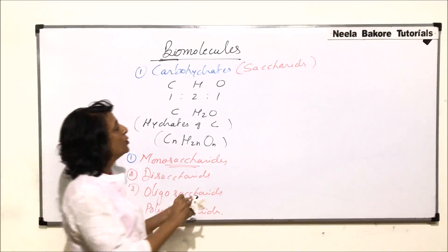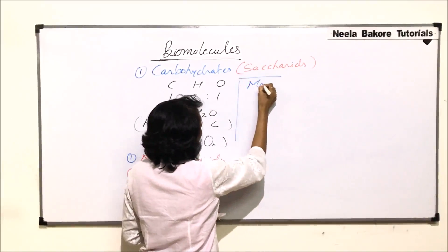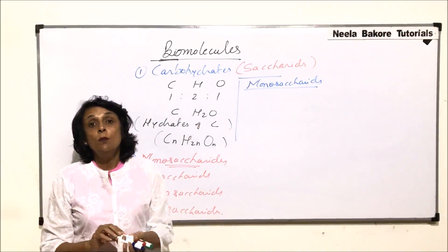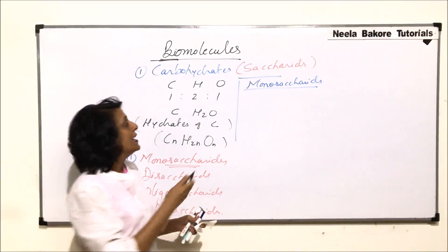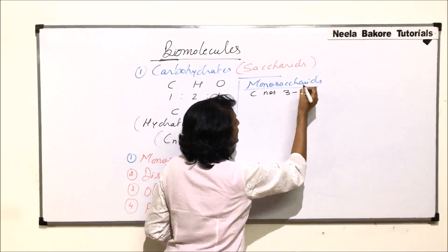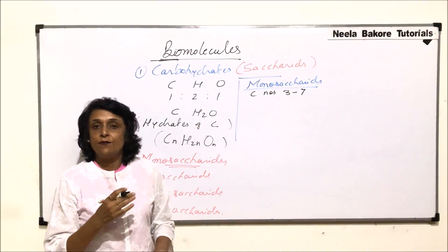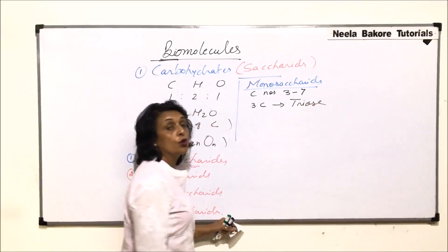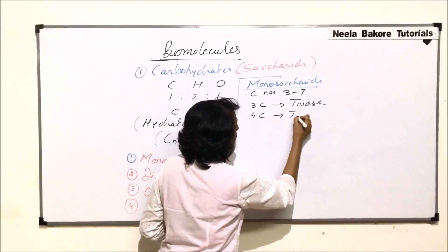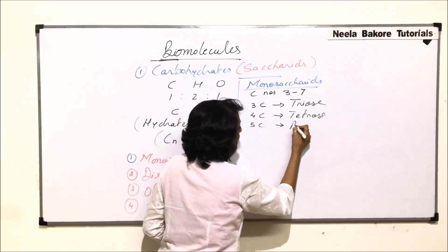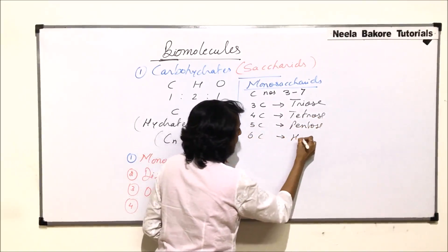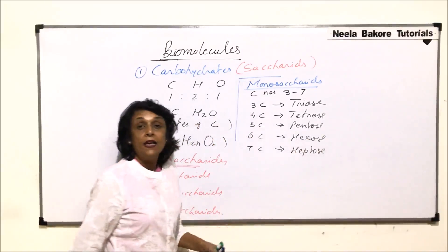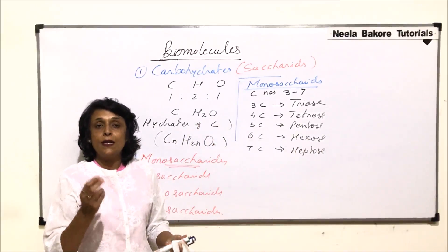Monosaccharides means single unit. Monosaccharides may have carbon numbers from three to seven. If there are three carbons, we call that sugar a triose sugar. Four carbons is a tetrose sugar, five carbons is a pentose sugar, six carbons is a hexose sugar, and seven carbons is known as a heptose sugar. These names are given based on the number of carbons they have.